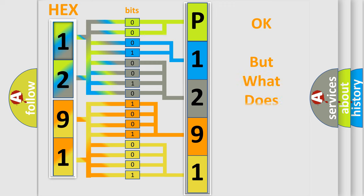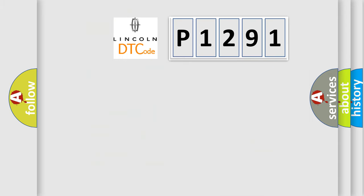We now know how the diagnostic tool translates the received information into a more comprehensible format. The number itself does not make sense if we cannot assign meaning to what it actually expresses. So, what does the Diagnostic Trouble Code P1291 interpret specifically for Lincoln car manufacturers?